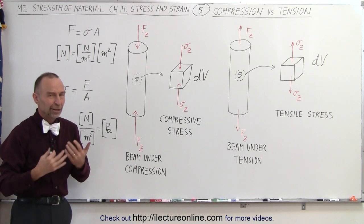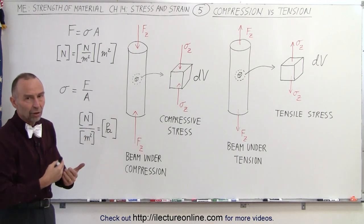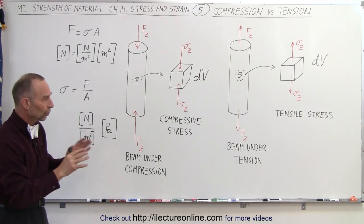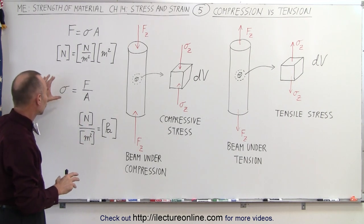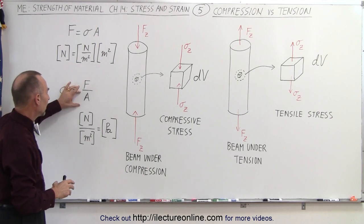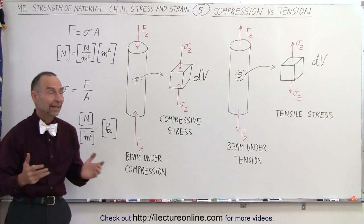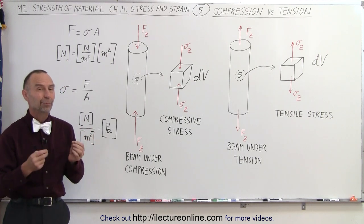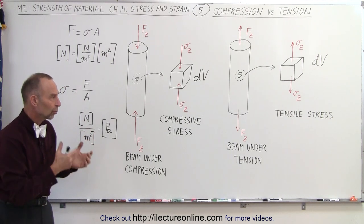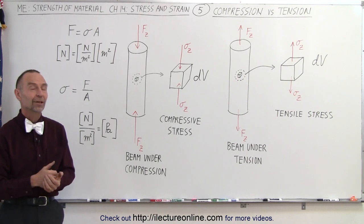The units for strain are unitless because it's a ratio of the change in the length over length, and we'll see that later. But the units for stress is force divided by area, therefore newtons per square meter, or pascals. And that's how we differentiate between compression and tension stress within the material. That is how it's done.